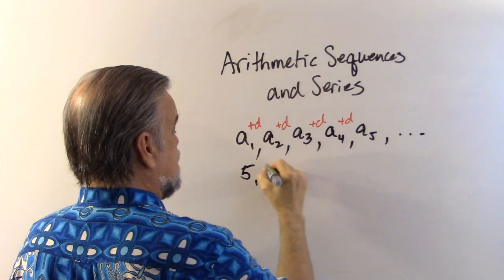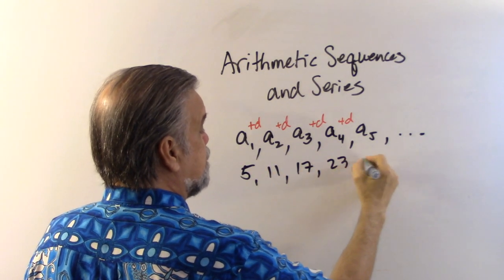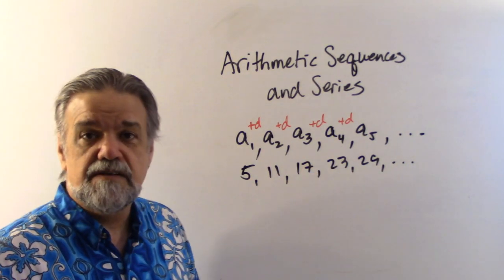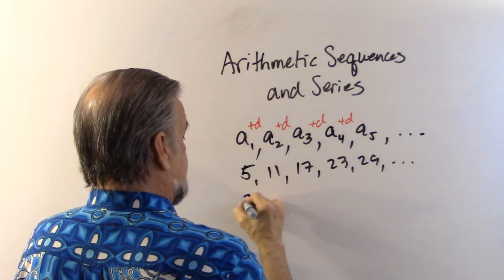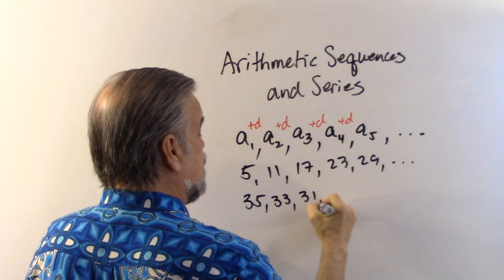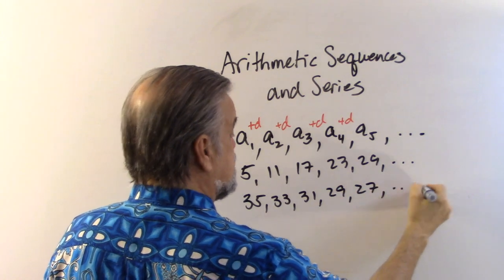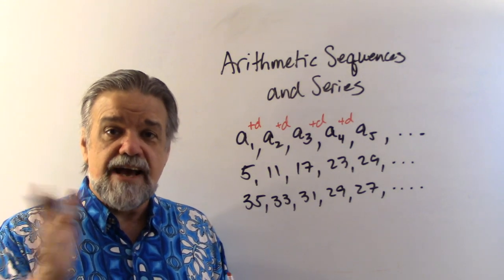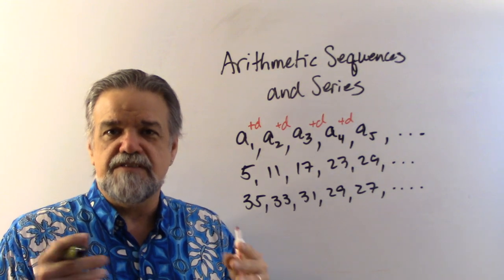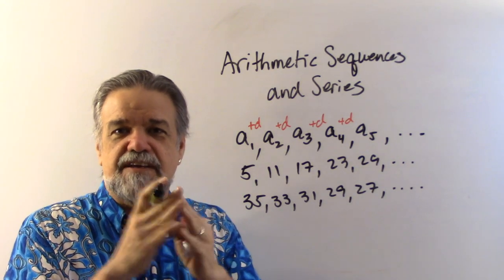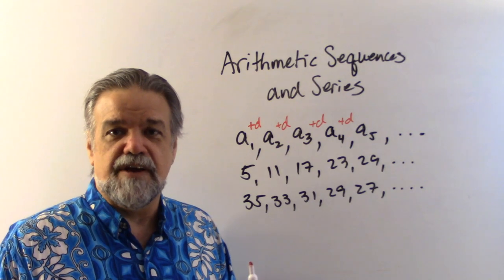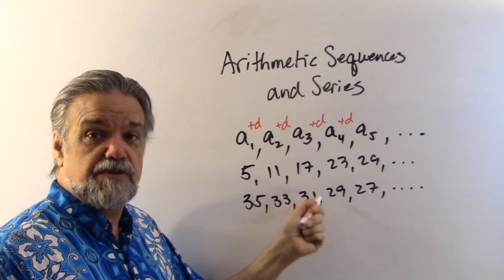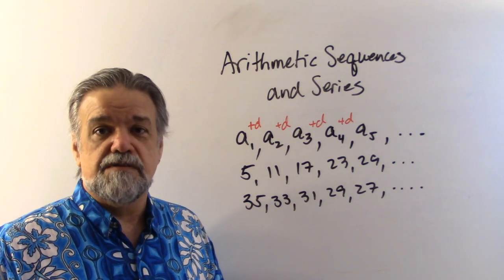In order for this to be an arithmetic sequence, it has to be stepping up or stepping down by the same amount each time. So in other words, I'm going to add a little amount here that I'll call D. D stands for difference, each time to get from term to term. So for example, 5, 11, 17, 23, 29. That's an arithmetic sequence because each time I'm adding six. Or 35, 33, 31, 29, 27, et cetera. That's an arithmetic sequence because each time I'm subtracting two. As long as you're always adding a number to get from term to term, that is what an arithmetic sequence is.